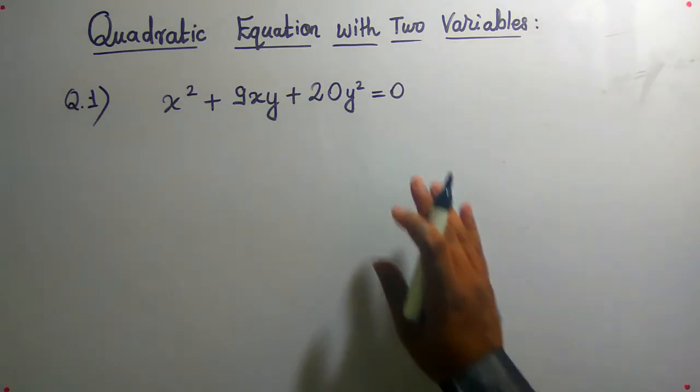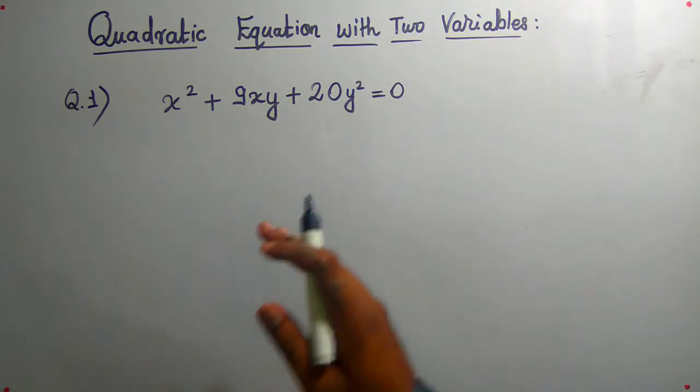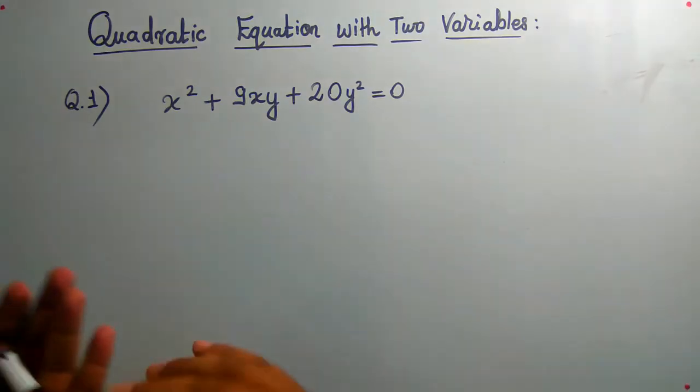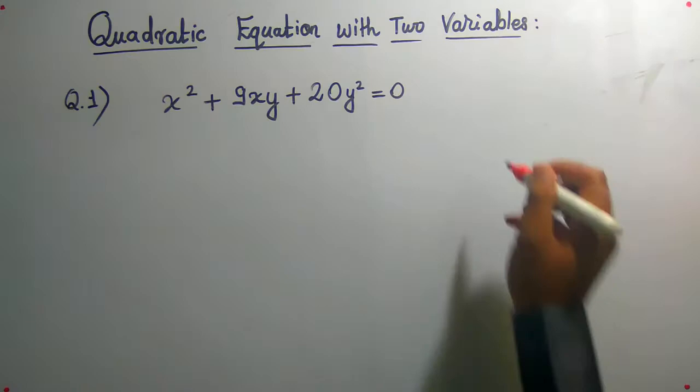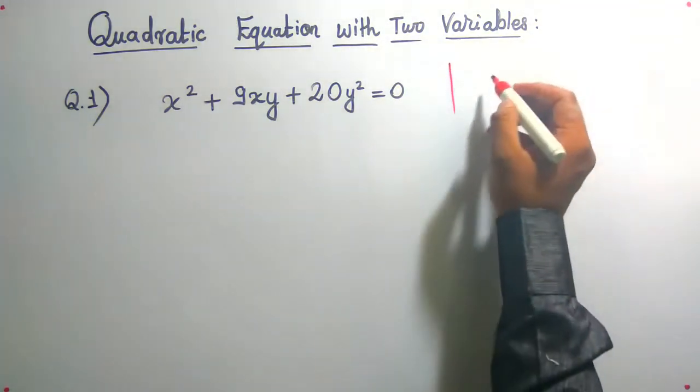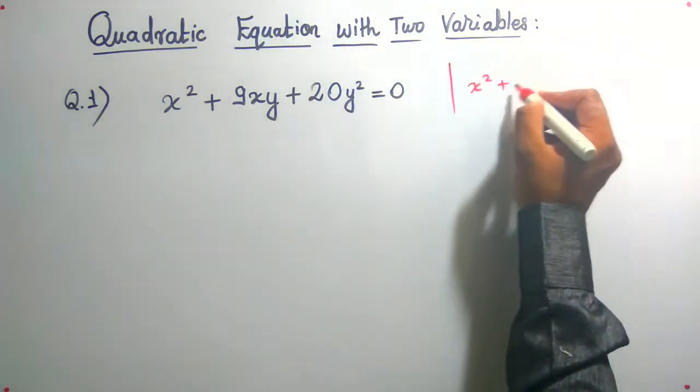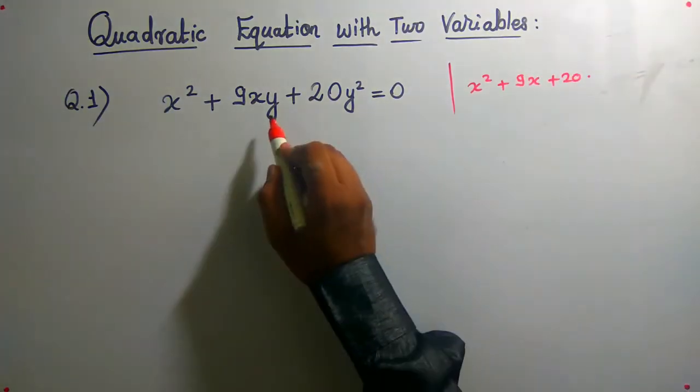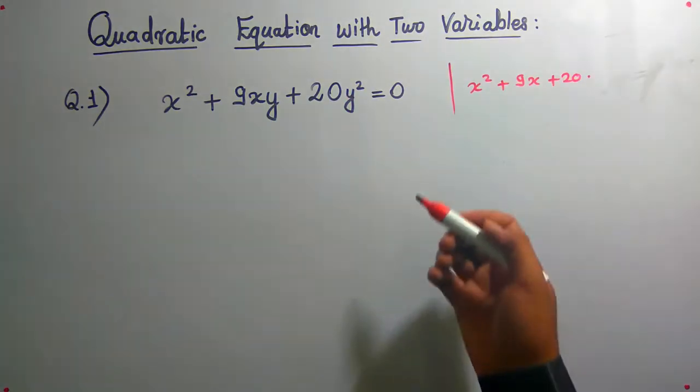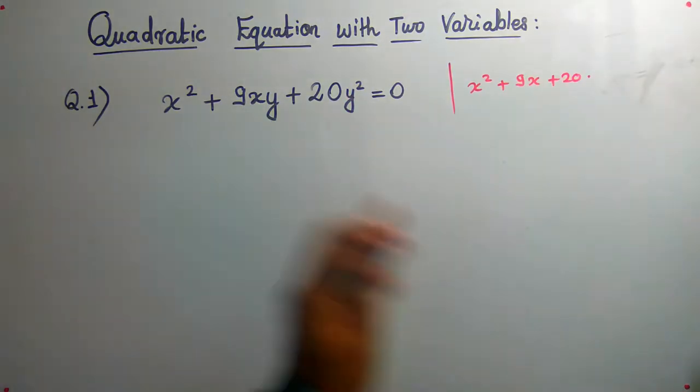So this is the question, fundamentally a regular quadratic equation. What's the difference? The quadratic equation is in this format: x² + 9x + 20, etc. This has a y variable extra, so how do we solve with two variables?